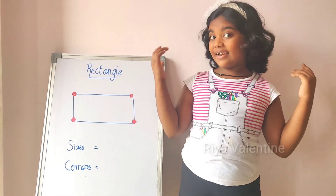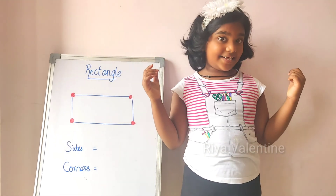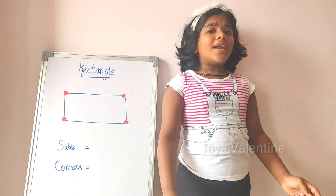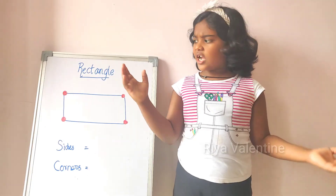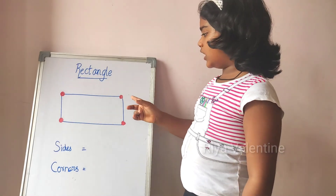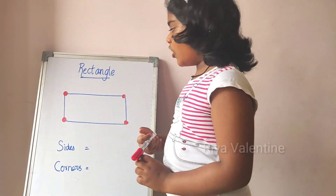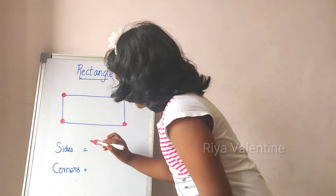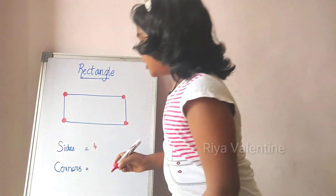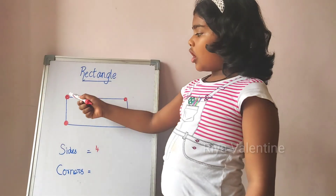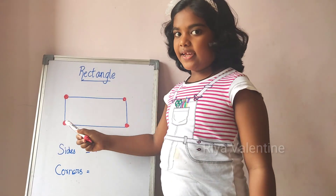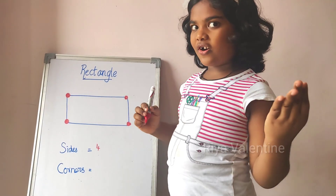Now, the rectangle also has 4 sides and 4 corners. The main feature of this rectangle is that opposite sides are equal. Now tell me how many sides are here: 1, 2, 3, 4 — four sides. And how many corners? One, two, three, four — four corners.